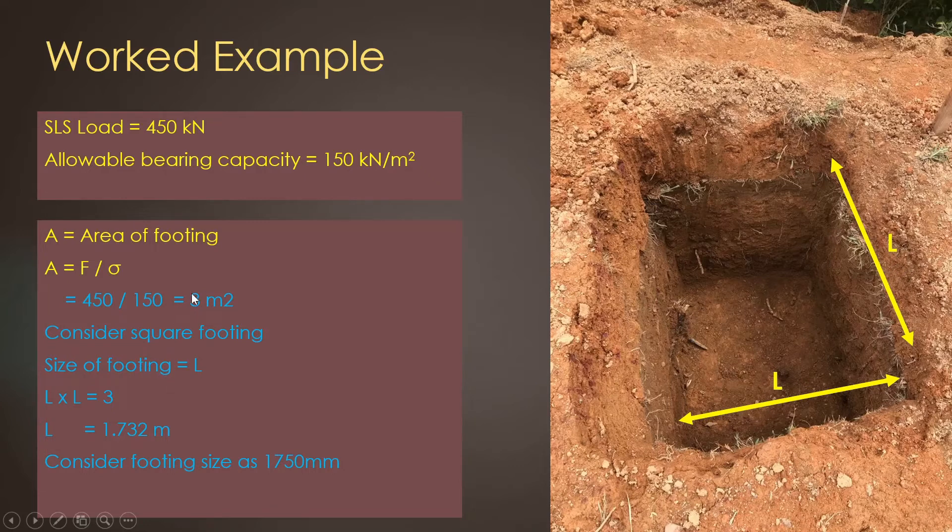Now we have to find the length and width. Area of the footing we have already found. In this case we consider square footing. Then length and width are equal. Length into width equals 3, because our area is 3. So length can be calculated from this equation. You have to take the square root of this. So 1.732 meters. This value may be considered 1750 millimeters.